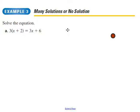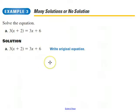Okay, I'm going to assume that you did that. What they did first, well, first they just copied the question down again. But the first thing that they did is they're going to distribute that 3. And they're going to get 3x plus 6 on the left is equal to 3x plus 6 on the right.